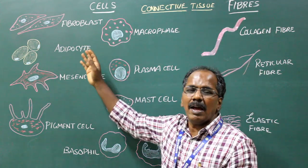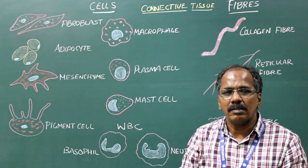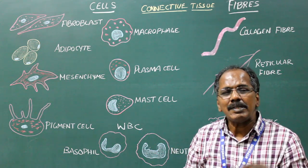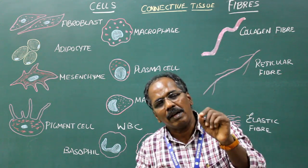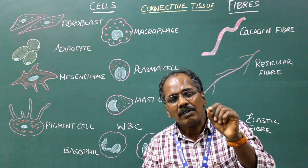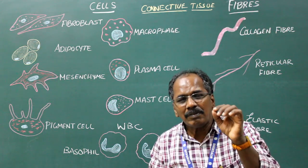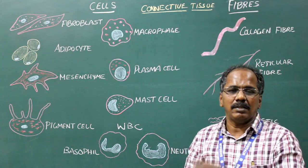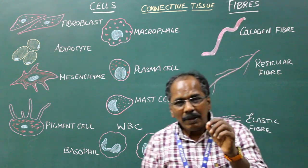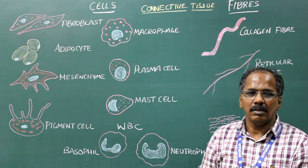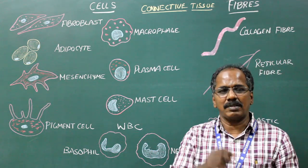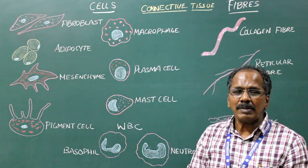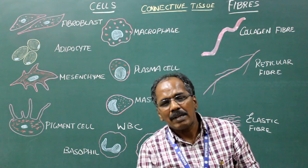Fibroblast: They are large flat spindle shaped cells that are found in the interstitial spaces of organs which are responsible for making extracellular matrix and collagen. They also play an important role in healing of wounds.